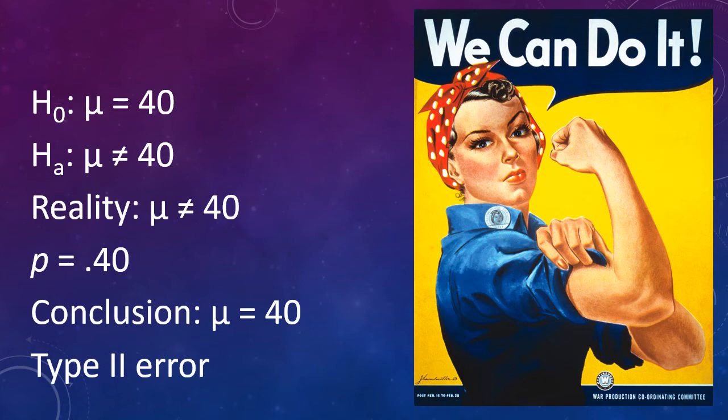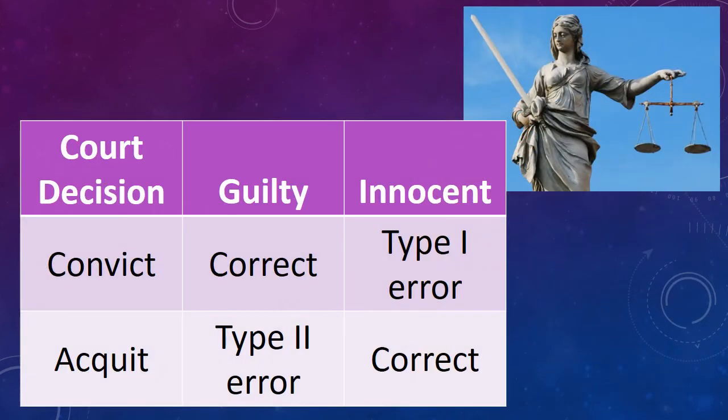You can think of Type I and Type II error as the mistakes you could make in a criminal trial. Either the defendant really is guilty or he's actually innocent. If you convict a truly guilty man or acquit a truly innocent man, the court has made the right decision and justice has been served. But the courts aren't perfect, and sometimes an innocent man gets convicted or a guilty man gets off scot-free. If you think of the null hypothesis as the hypothesis of innocence, a Type I error is like convicting an innocent man, and a Type II error is like acquitting a guilty man.